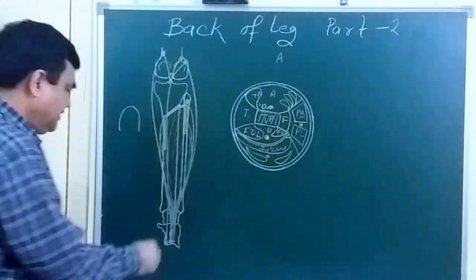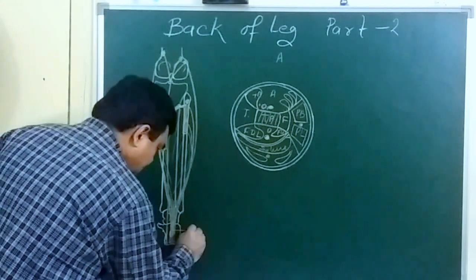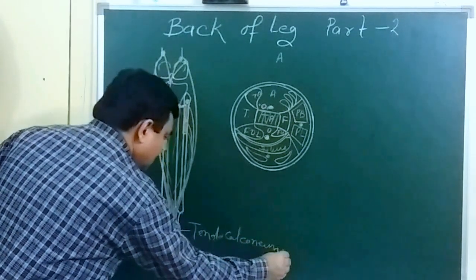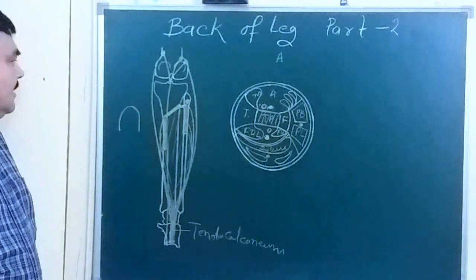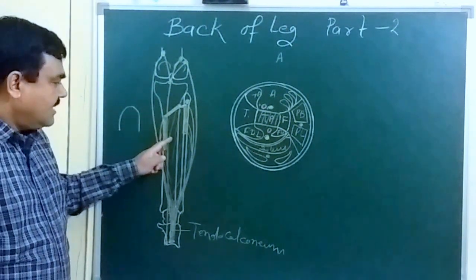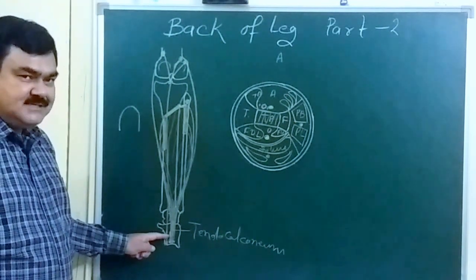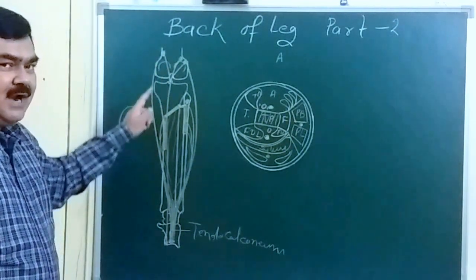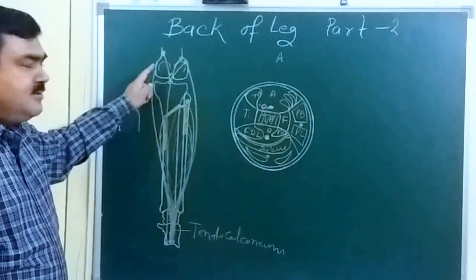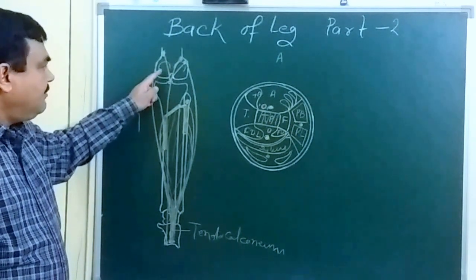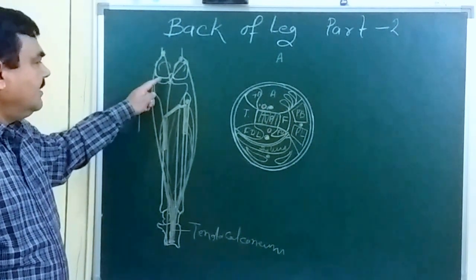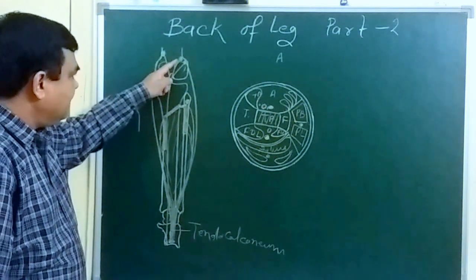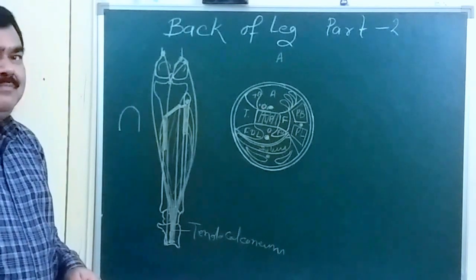Collectively this tendon is known as the tendon calcaneum, also called the tendon of Achilles. The action of soleus is plantar flexion at the ankle joint, and the action of gastrocnemius is also plantar flexion at the ankle joint. Additionally, gastrocnemius is a weak flexor of the knee joint. Plantaris is a vestigial muscle and may be absent in some cases.